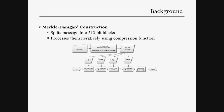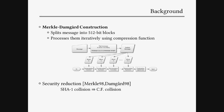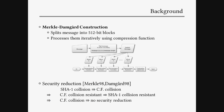SHA-1 accepts arbitrary length bit strings and basically processes them using the Merkle-Damgård construction. It splits the entire message into 512-bit blocks and processes them iteratively using a compression function that only takes fixed-size inputs. There is a security reduction that basically says if you have a SHA-1 collision, you can determine a collision for the compression function. This means that if the compression function is collision resistant — practically infeasible to find collisions — then it's also practically infeasible to find collisions for SHA-1. But it also implies that once we find a collision for the compression function, this whole security reduction does not hold anymore.